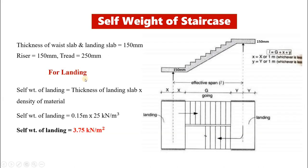Next, for landing load: only the self weight of slab is considered. The thickness of landing slab is also taken as 150 mm. So self weight of landing equals thickness of landing slab into density of material used: 0.15 multiplied with 25 (RCC). Then self weight of landing is 3.75 kN per meter square.